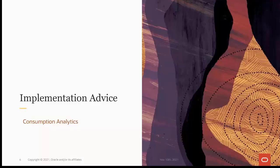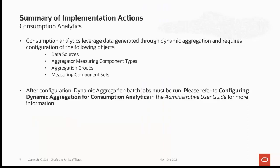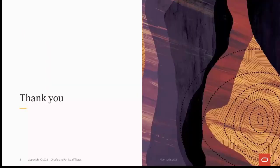In this implementation advice section, we will go through what you need to consider before enabling this feature in your business. Consumption analytics leverages data generated through dynamic aggregation and requires configuration of the following objects: data sources, aggregator measuring component types, aggregation groups, and measuring component sets. After configuration, dynamic aggregation batch jobs must be run. Please refer to the Configuring Dynamic Aggregation for Consumption Analytics Administrative User Guide for more information. This concludes the presentation — thank you for watching.